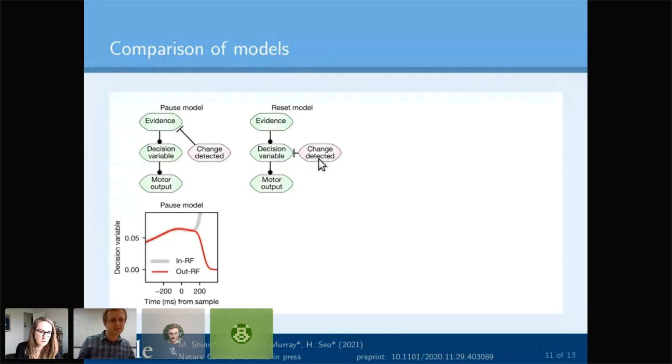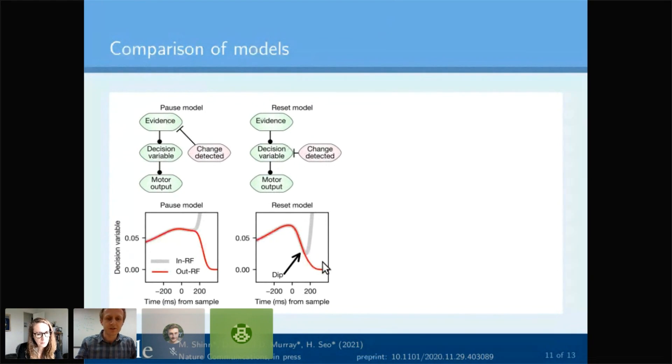What about this? This makes the most sense possibly from a normative perspective: if you detect the change, you take your decision variable and reset it back to zero, pretending like you're starting from square one. This made a lot of sense to me when I started looking into this. When you look at it, it does produce this type of dip, except it only produces it when the frontal eye field cell you're looking at is within the receptive field. When it's outside the receptive field, it doesn't produce that dip.